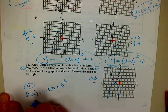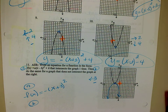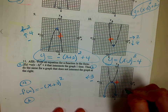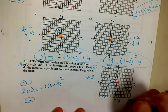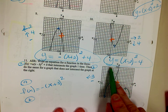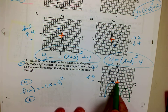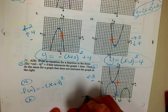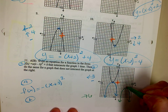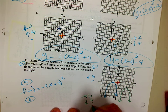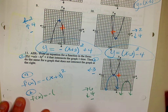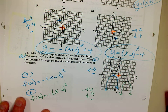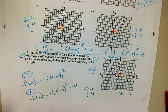Part B: write an equation for a graph that does not intersect the original graph at all. So maybe do one over here — you could have many different answers really. This one right here is definitely not going to intersect the original one. I went to the right 6 and down 4, and it is upside down. So f of x equals negative times x minus 6 squared minus 4. And that is the error question.